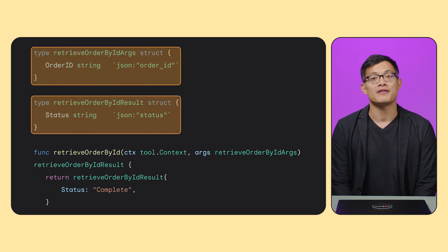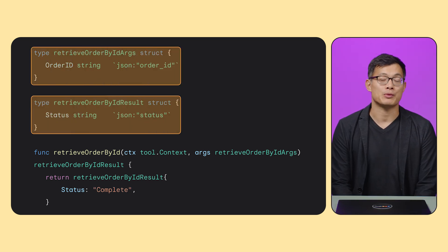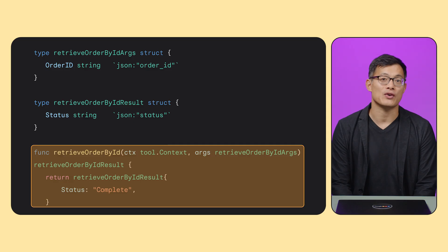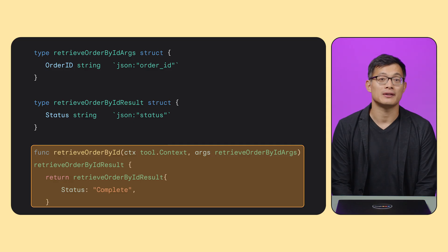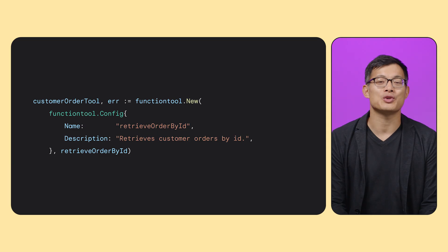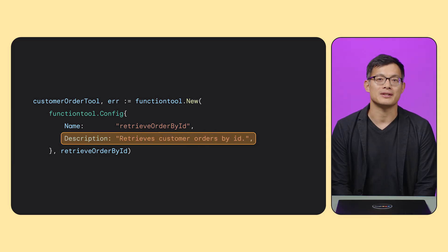Let's see how that function is defined. First, you define structs to represent the input and return values. Then, a function with your custom Go logic — in this case, we just return the complete status for all orders. We then pass this function to the function tool function, which transforms it into a tool object for us. We provide a suitable description that the LLM will use to determine when it should call the tool.